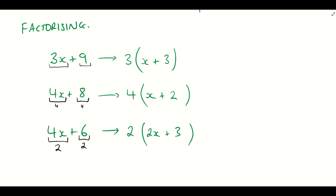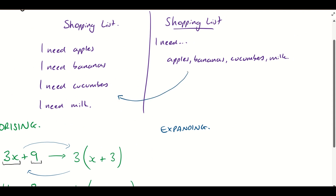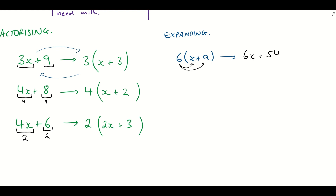That's factorizing. Now what we need to do is go the other way and expand. We can see that we're going from something large and factorizing it — making our lives a little bit easier, like our shopping list. But now we need to take something like this and expand it out into the longer form. Let's say we've got 6 outside of (x + 9). We do 6 times x, which gives us 6x. We then do 6 times 9, which gives us 54. So our final answer is 6x + 54.